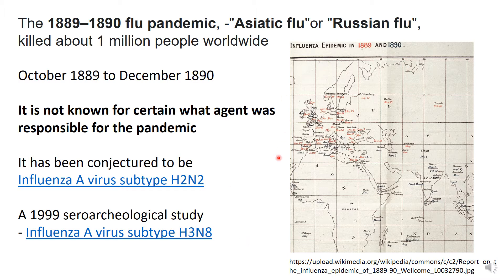This pandemic also reached the United States, and interestingly enough it was initially reported in the papers as being a mild illness and people didn't have to worry about it. It hit the ports first, so Boston and New York were hit first, and then it slowly spread across the United States. There were a significant number of deaths in the United States as well.